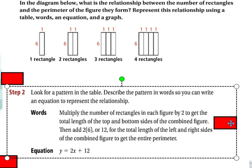Here is words. We multiply the number of rectangles in each figure by two to get the total length at the top and bottom sides of the combined figure. Then we add 2 times 6, or 12, which is the two sides, left and right side. So 2 times X. X represents the number of rectangles. 2 times X plus 12 gives us the perimeter. So that is a way to look at how it is. So in words, we would write it out this way.